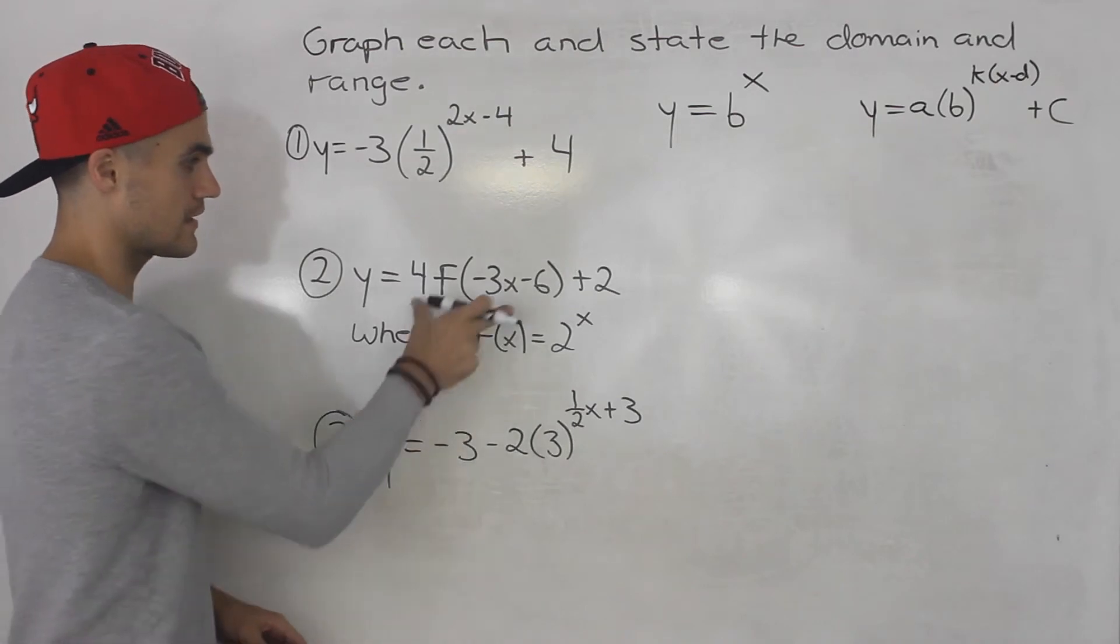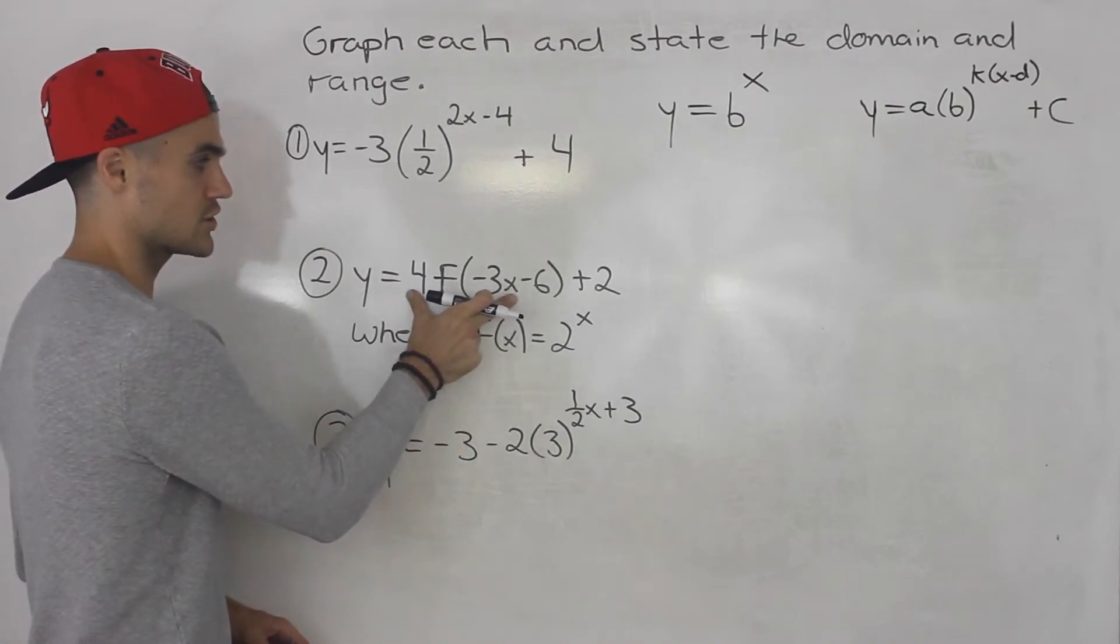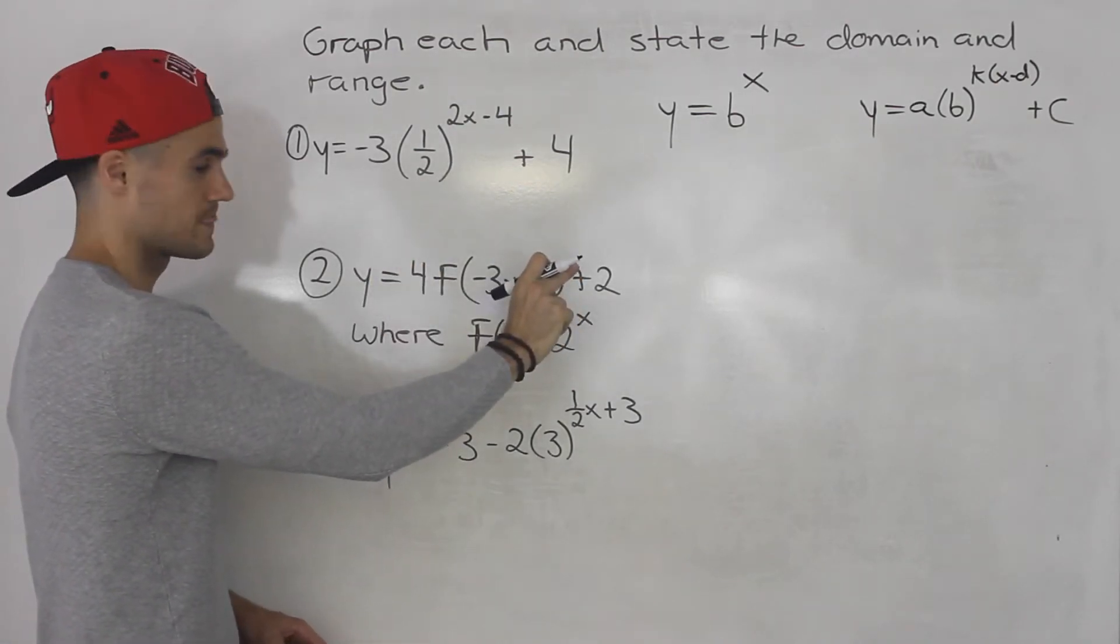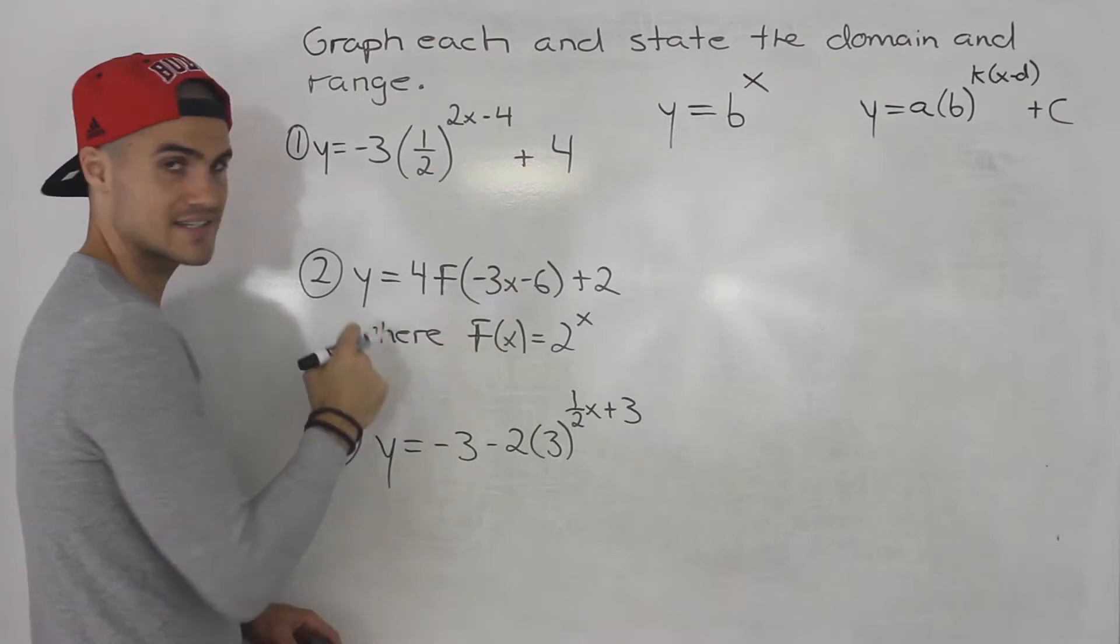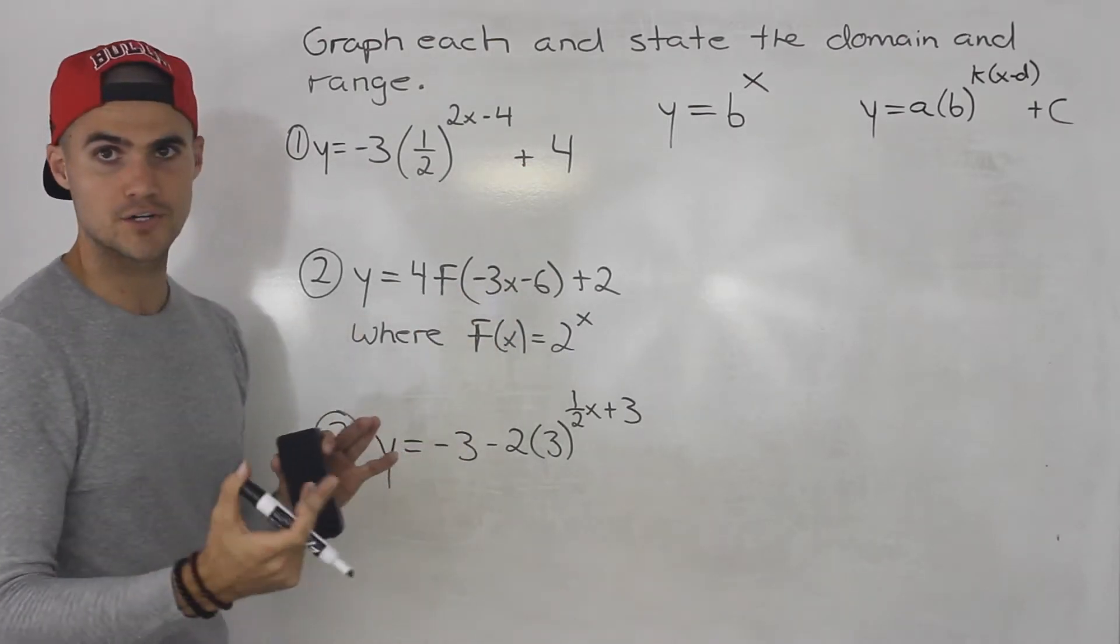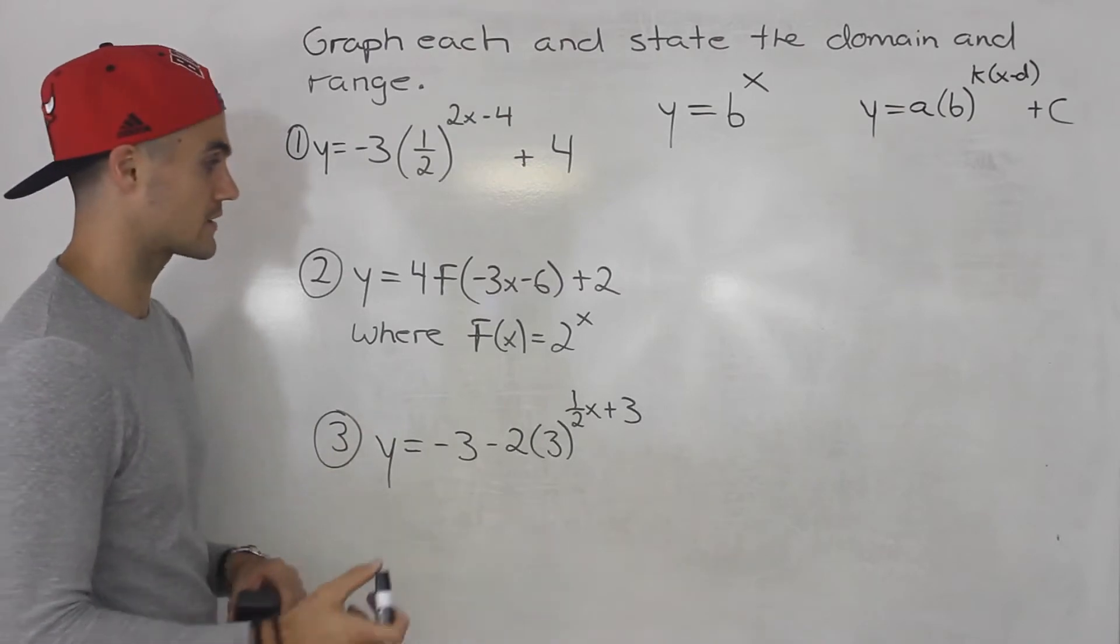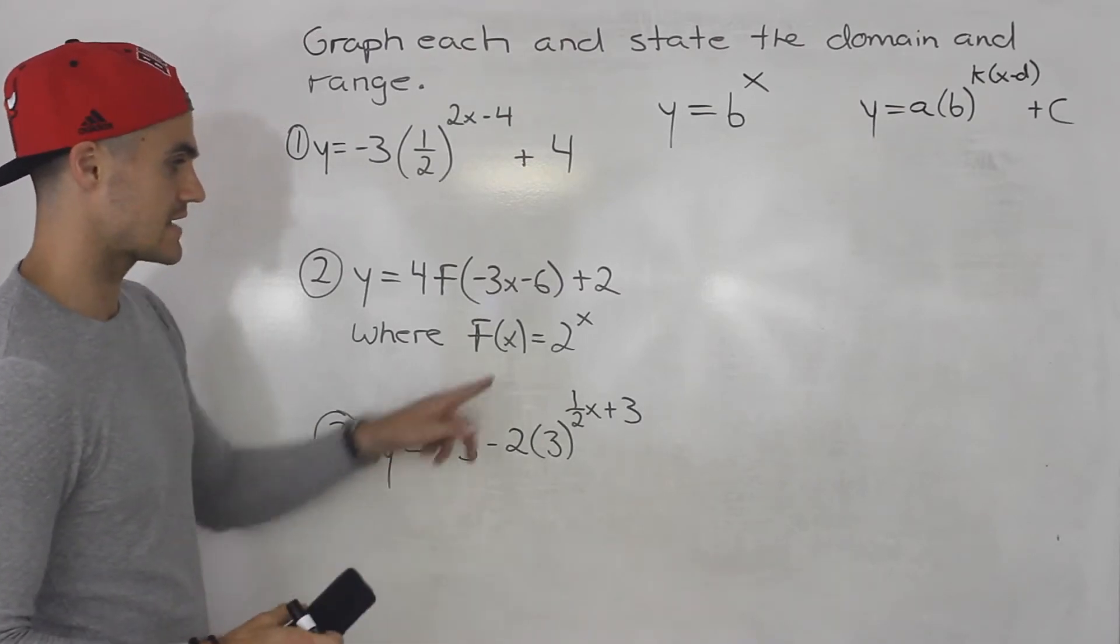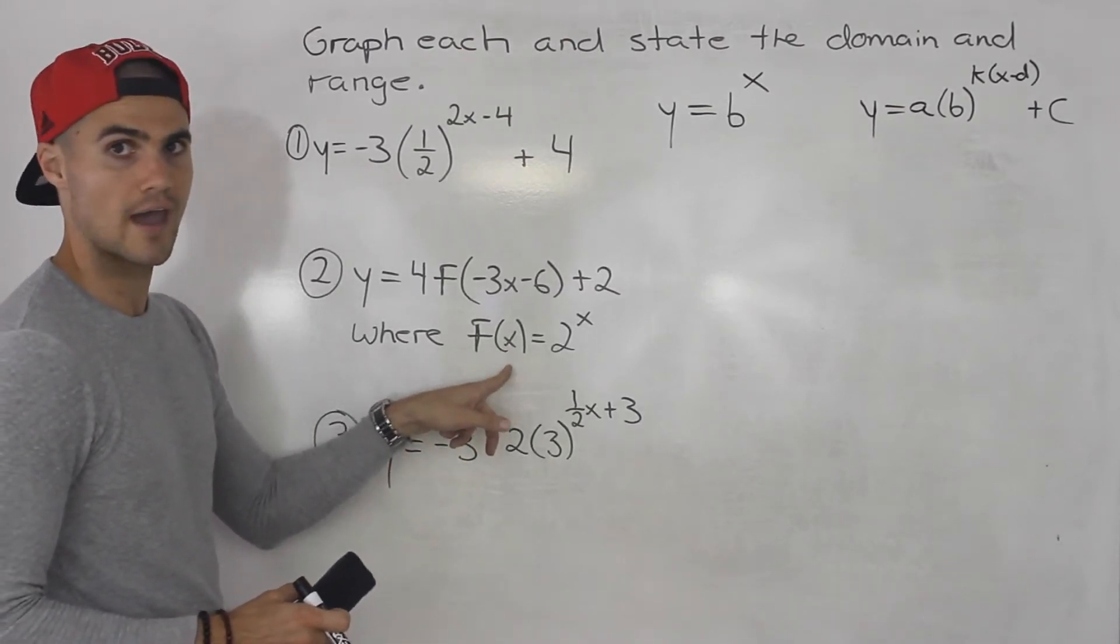So notice here they gave us the function in a general format and this f of x can be anything. You could apply this transformation to any of the functions - x squared, absolute value x, 1 over x. In this case they told you the parent function is 2 to the x.